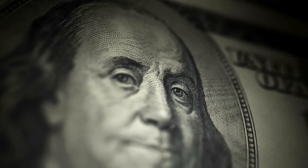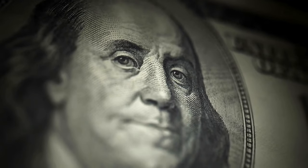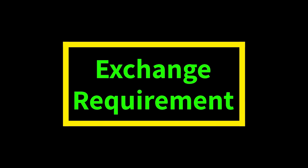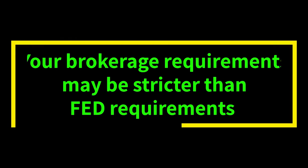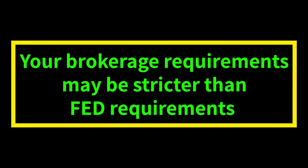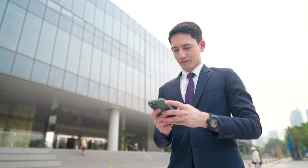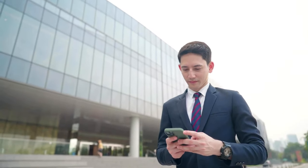There are two kinds of margin requirements. One is set by the broker — it is called the house requirement. The other is regulatory, called the Fed requirement or exchange requirement. Generally speaking, your broker's requirements may be higher than those set by the Federal Reserve Board. But that is only the initial requirement you must fulfill before placing a trade.